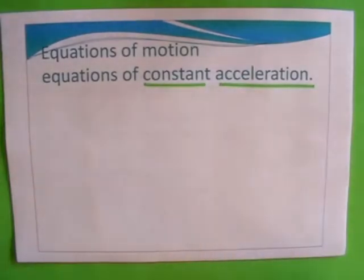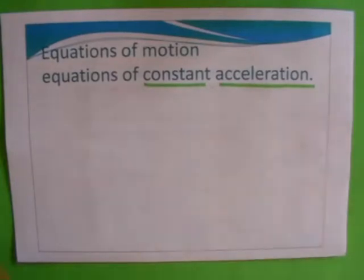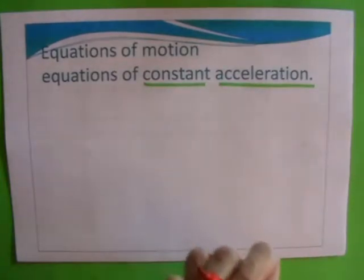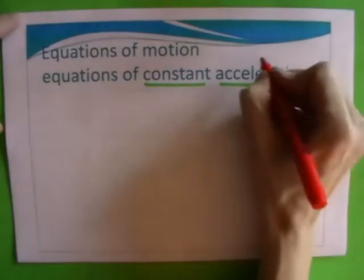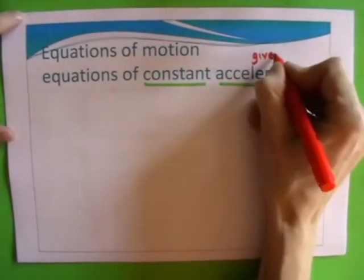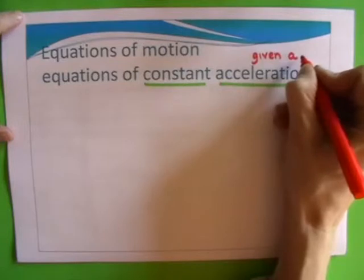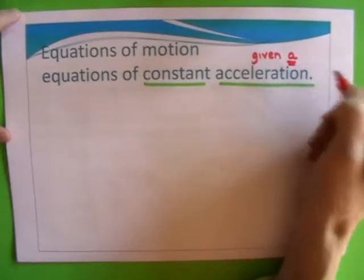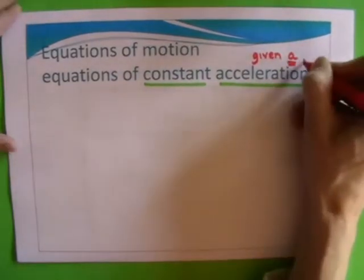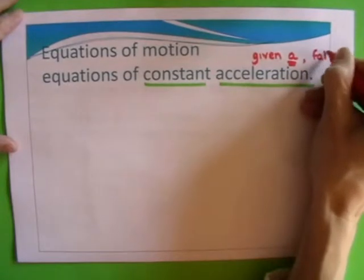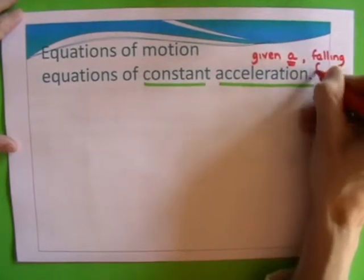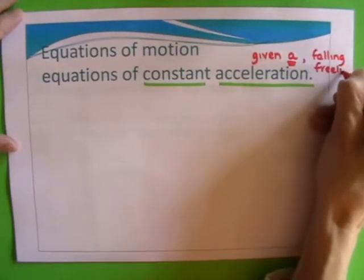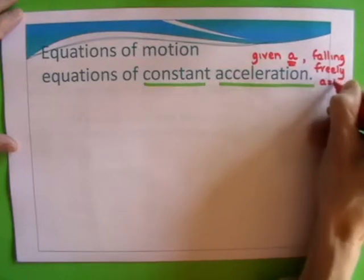Now the situations you might be told that in is you might be told something about a car moving along with an acceleration, and you can assume that acceleration is constant. Or if it's falling freely, then the value of a is given by acceleration due to gravity, which is 10 meters per second squared on Earth.